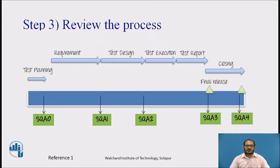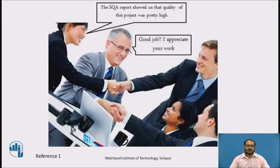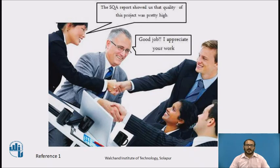The results include test design, test execution, test reports, and closing. Once you walk through these steps, the software quality assurance implementation produces the result of the test management reviews and audit. This is the evidence to show your stakeholders about your management quality. The software quality assurance report shows that the quality of this project was high, and the organization will recognize your work.